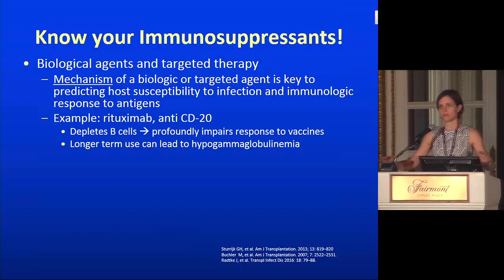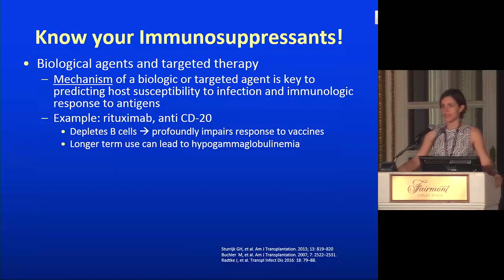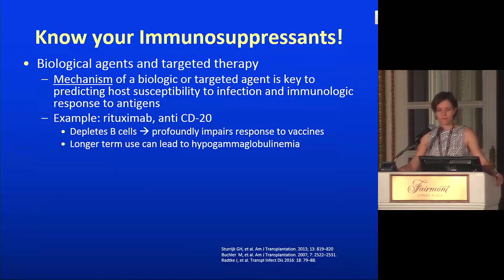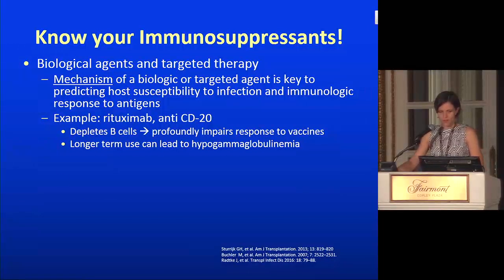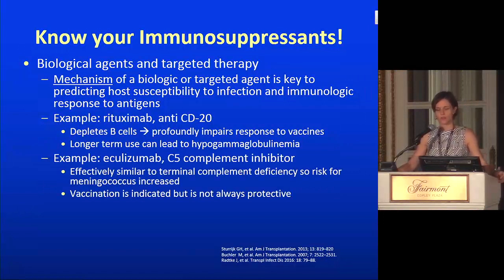If you're treating somebody for rejection with rituximab, you have to remember that if you give them the flu vaccine two months later, it might not be very protective. You need to warn the patient. Also, if people get rituximab repeatedly over time — someone really struggling with rejection or with underlying lupus — those patients can actually become hypogammaglobulinemic, setting them up for recurrent respiratory tract infections and recurrent pneumonias, all related to the mechanism of rituximab.